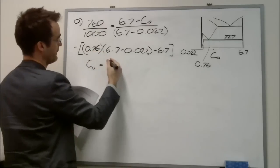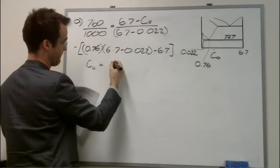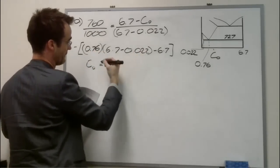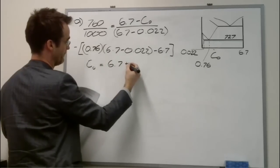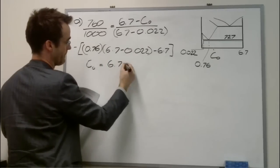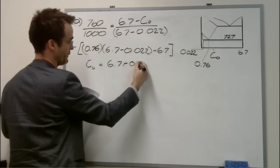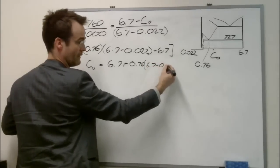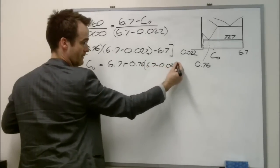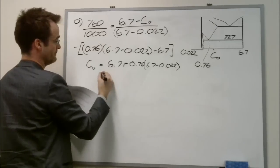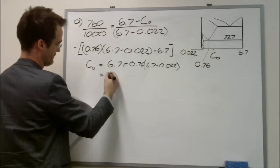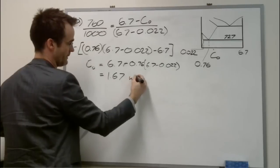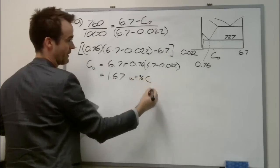So it turns out C-naught is going to be, I'll just do one more step, 6.7 minus 0.76 times 6.7 minus 0.022, which equals 1.67 weight percent carbon.